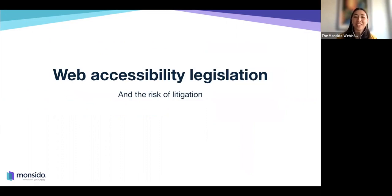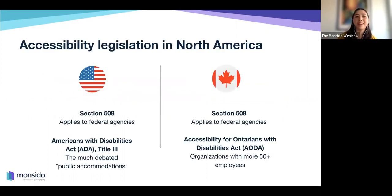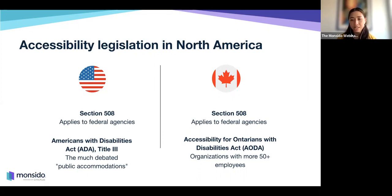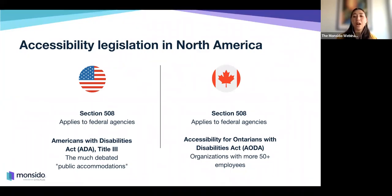Looking at web accessibility legislation in North America, in the US there are two main accessibility legislations. First, Section 508 of the Rehabilitation Act from 1973, which applies to federal agencies ensuring their IT and systems are accessible. Second, the Americans with Disabilities Act Title III, which states that all public accommodations need to be accessible — the wording 'public accommodations' is much debated, and we'll jump into that. On the Canadian side, there is the Accessible Canada Act, which applies to federal agencies, and the most notable provincial law being the Accessibility for Ontarians with Disabilities Act, or AODA, mandating organizations with 50-plus employees ensure their websites are accessible.